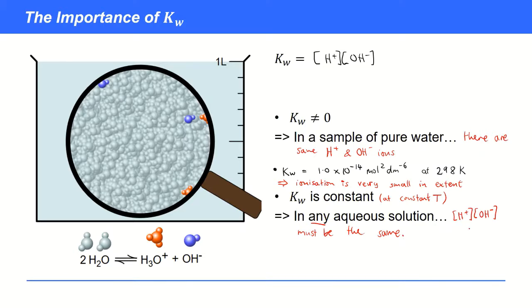You can think of Kw as a sort of control lever: whenever you change as an experimenter either of these two concentrations, the other one will change in order to restore this product to be 1 times 10 to the minus 14 mole squared per decimeter to the minus 6.